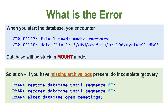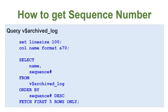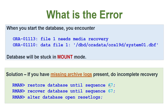You will have to go for incomplete recovery. You will say 'restore database until sequence' — this number you will change as per your environment. Then you will say 'recover database until sequence,' and then open the database with 'alter database open reset logs' because we have done incomplete recovery. To get the sequence number, query v$archive_log: select name, sequence number from v$archive_log. You will get the sequence number to use for incomplete recovery.